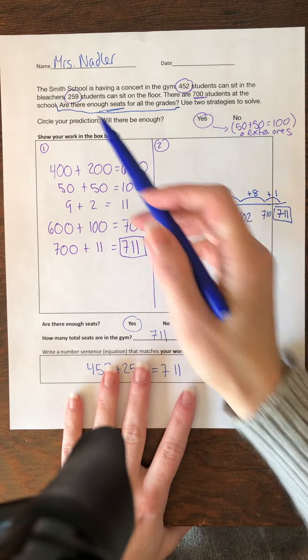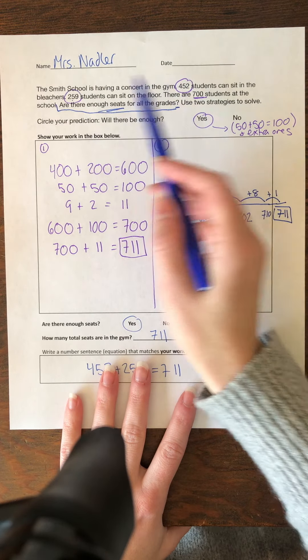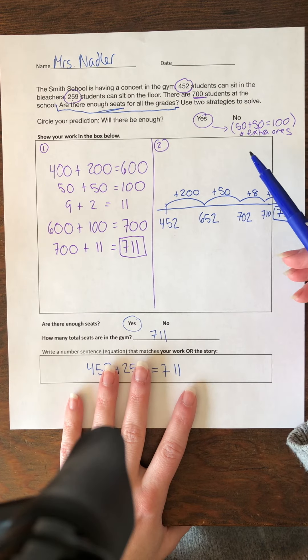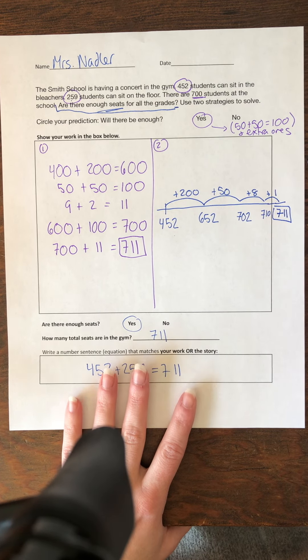What it's asking is, are there enough seats? These are the two opportunities where there were sitting opportunities. So I need to figure out, are there enough for these 700 kids to fit in?